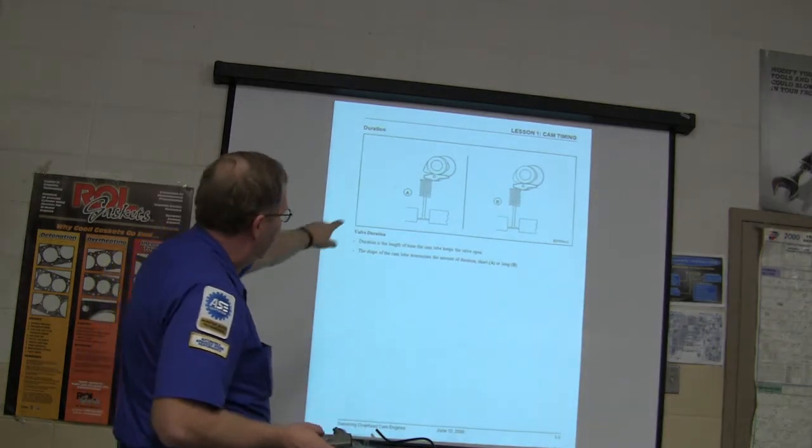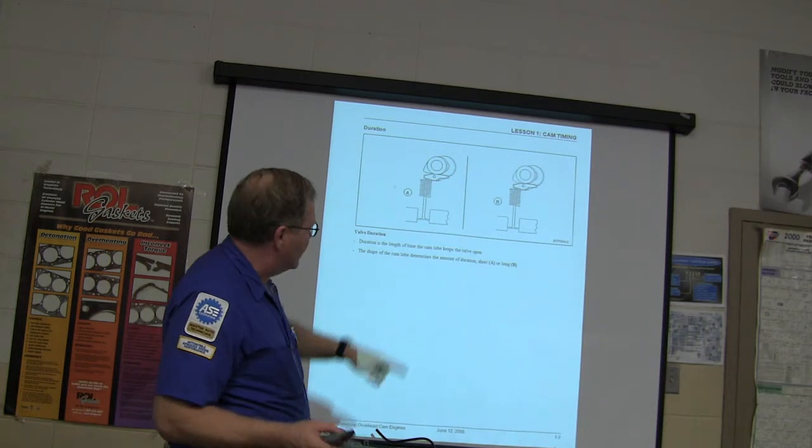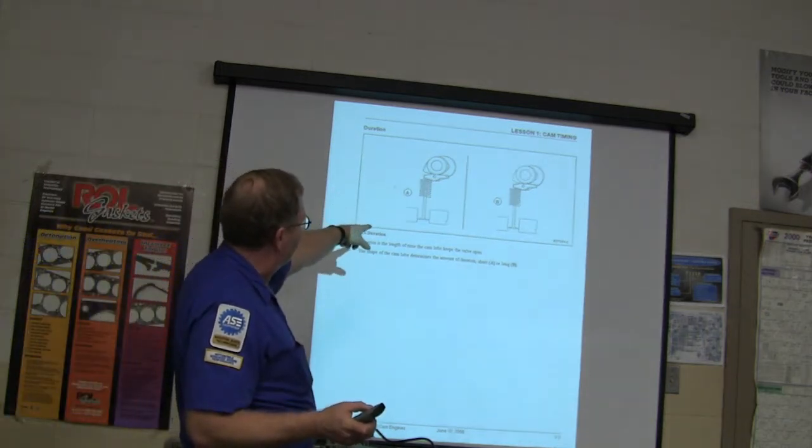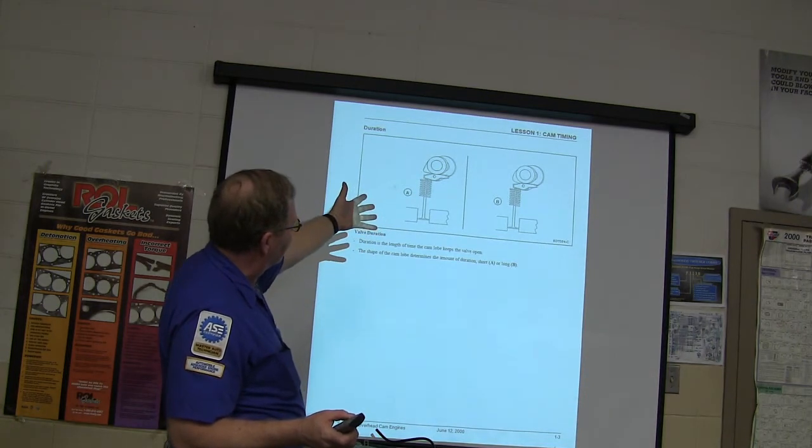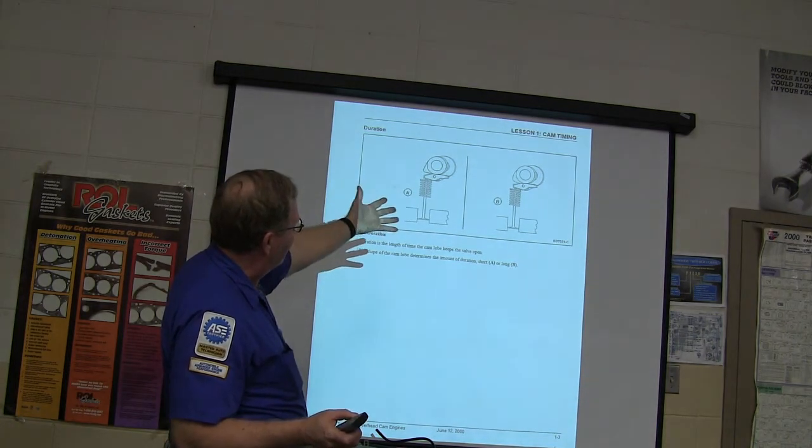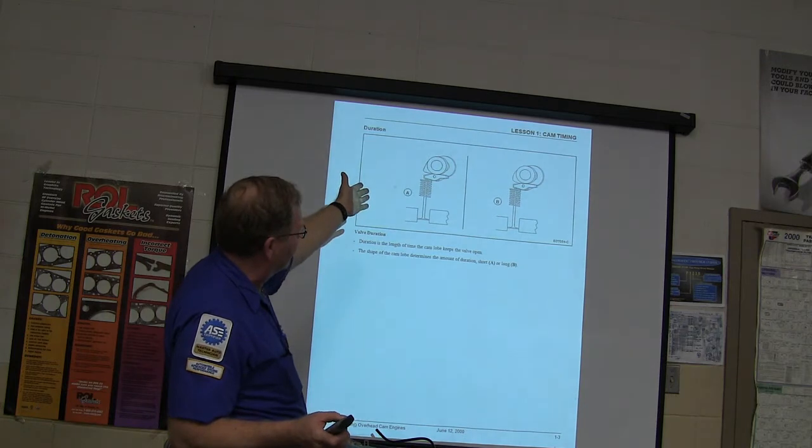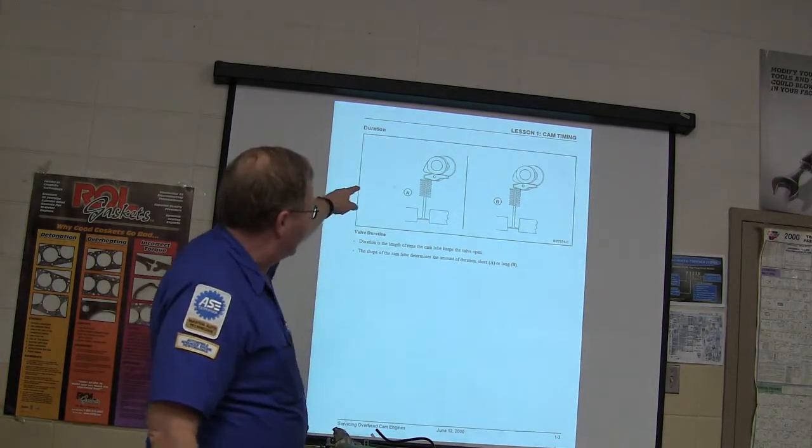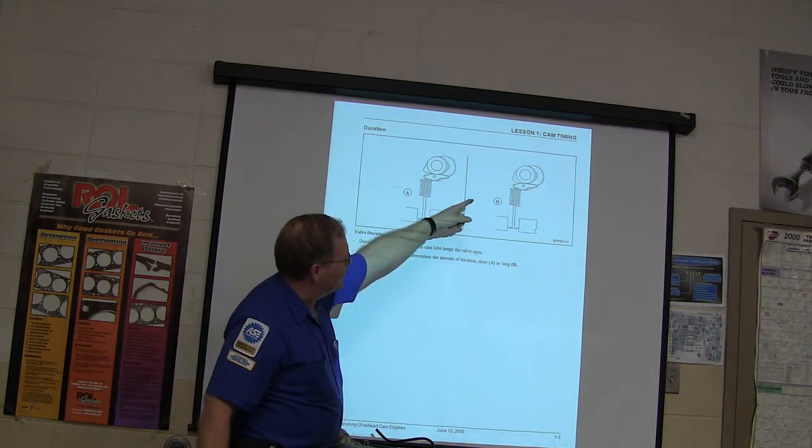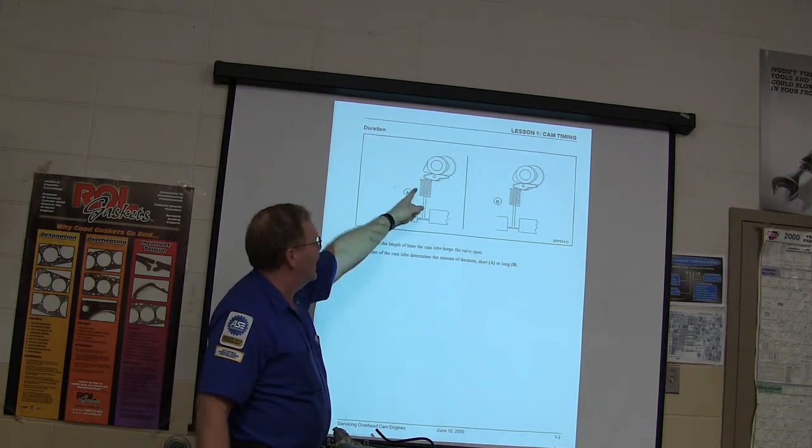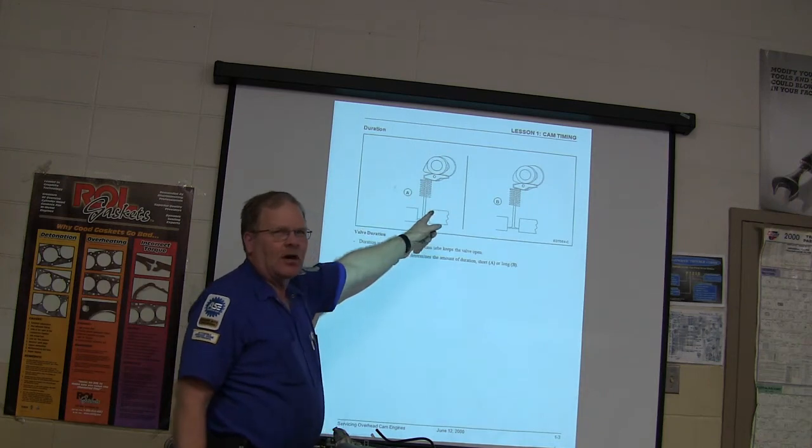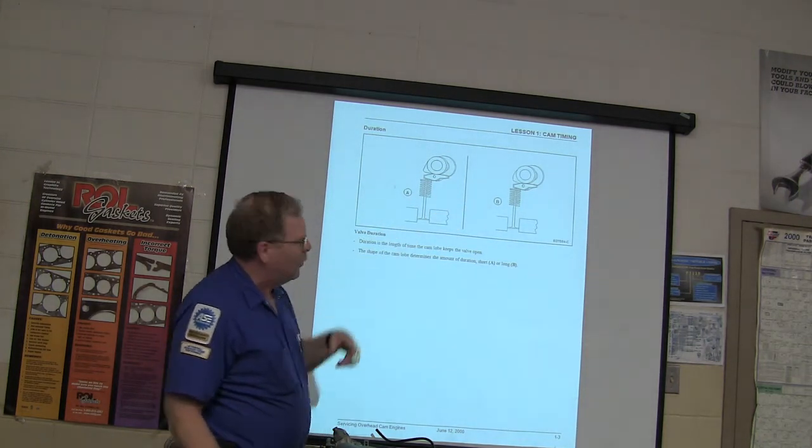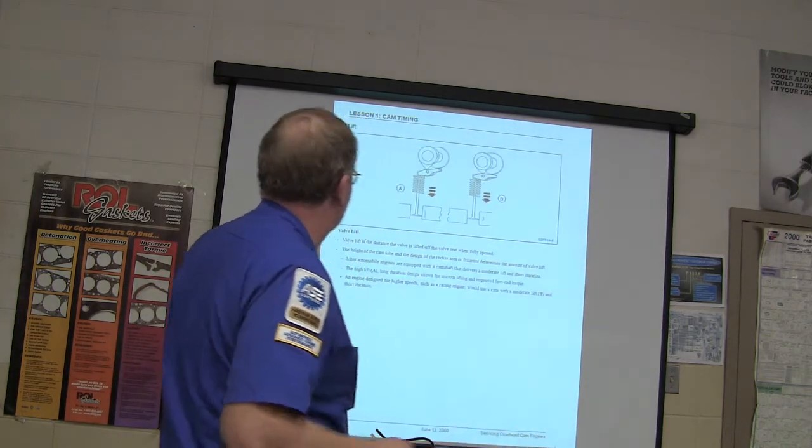The shape of the cam lobe, which is that egg up there, determines the amount of duration, short or long. You see that? You've got your A and your B. Those two pictures, looking at them, what's the difference? The shape of this is a lot sharper in that picture than it is over there. See the little egg, the little nose on that egg? It's sharper. So basically you're looking at that one keeping the thing open longer while it's open. It doesn't close as quick.